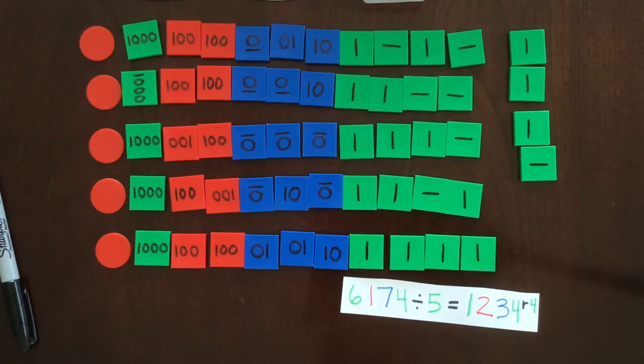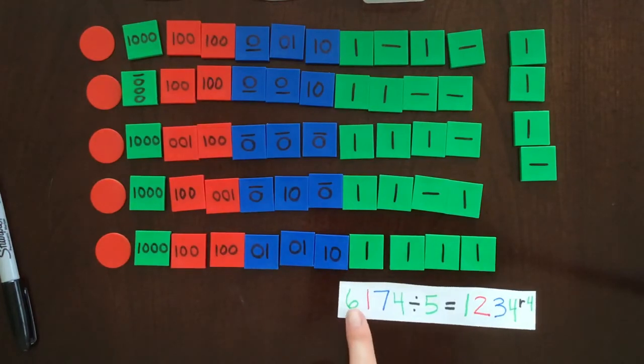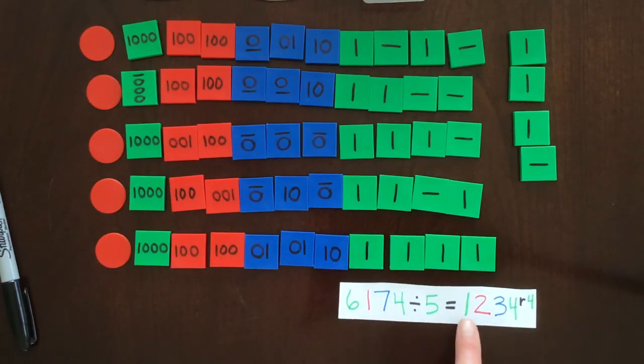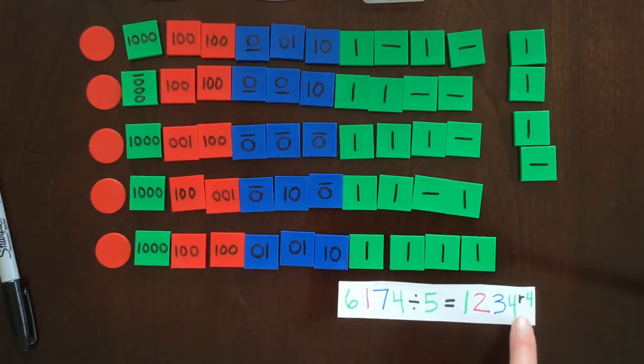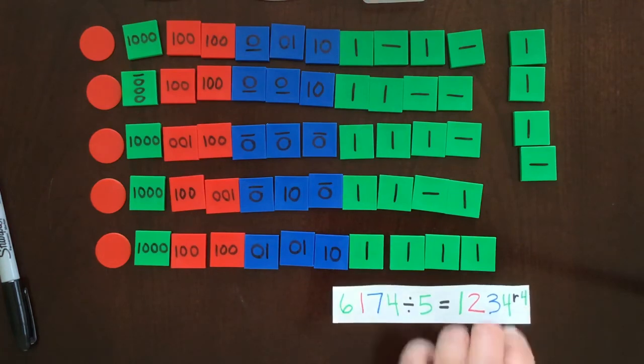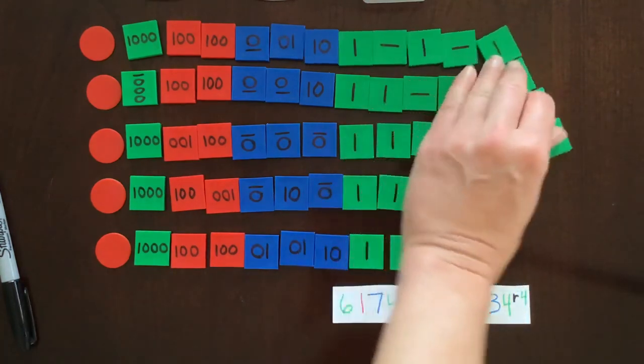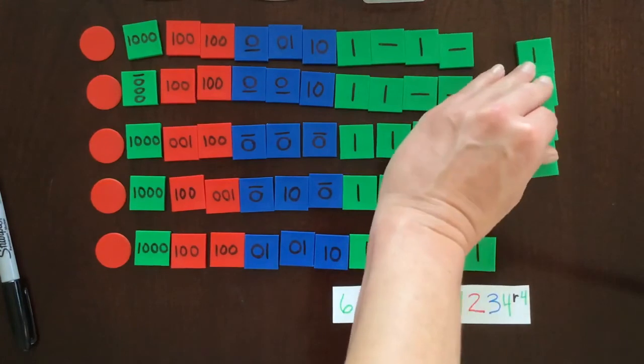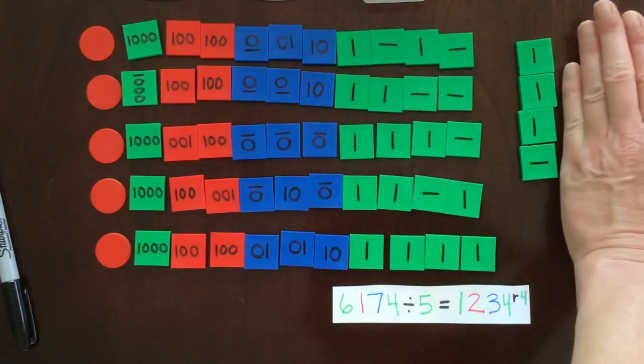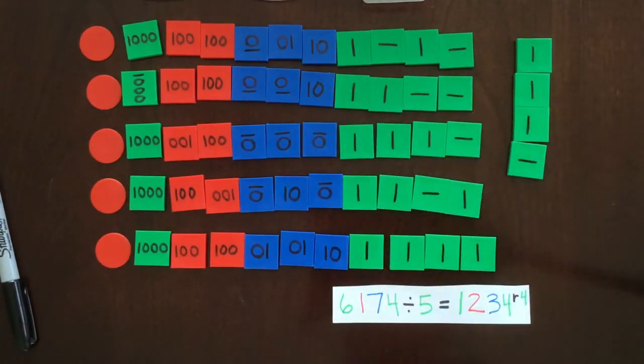So my answer to 6,174 divided by 5 equals 1,234 remainder 4. And I would typically have this remainder a little bit more organized. And that is how you do dynamic division with a remainder using the Montessori stamp game.